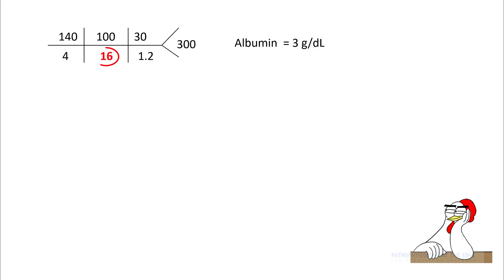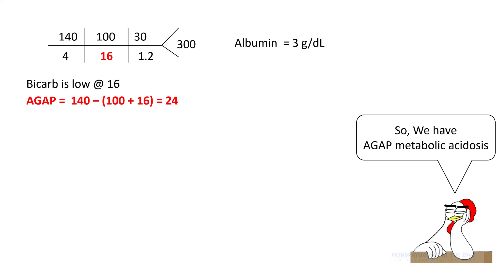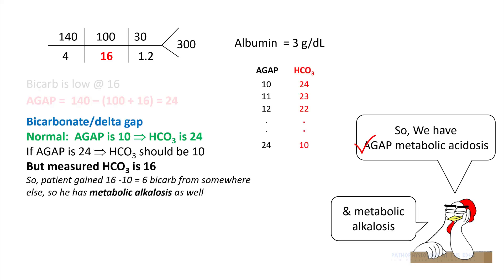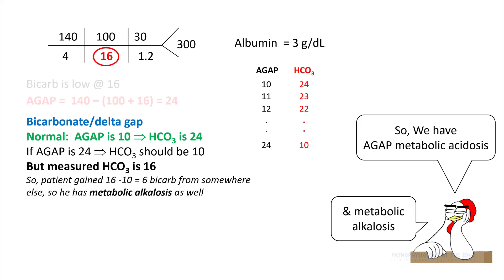Let's take an example. Your bicarb is 16. Your anion gap — sodium minus chloride plus bicarb — is 24, so you have an anion gap metabolic acidosis. Next, look at the bicarb or delta gap. After correcting for albumin of 3, the normal anion gap for this patient should be 10 and normal bicarb should be 24. There is a 1-to-1 ratio between anion gap and bicarb, so if your anion gap went from 10 to 24, you should have a subsequent drop in bicarb from 24 to 10. But when you measure this patient, the bicarb comes out to be 16 — meaning the patient is getting 6 bicarb from somewhere else, so he also has a metabolic alkalosis.